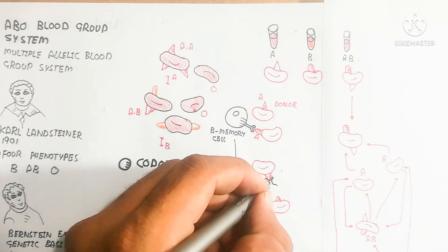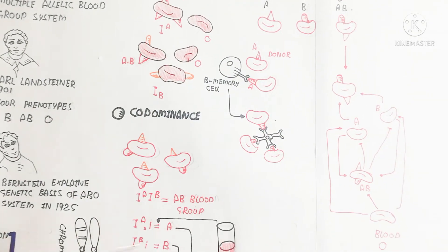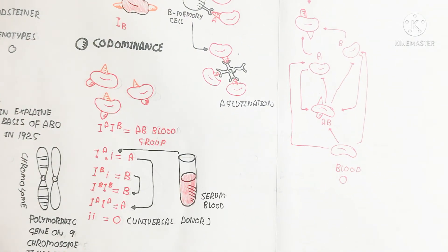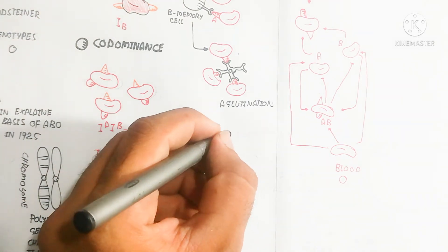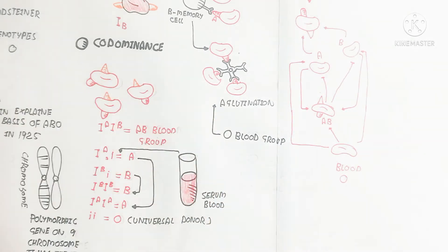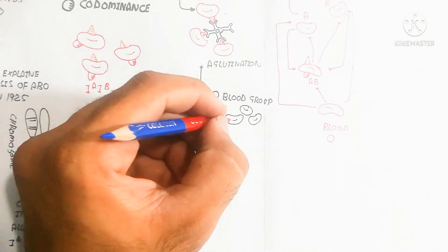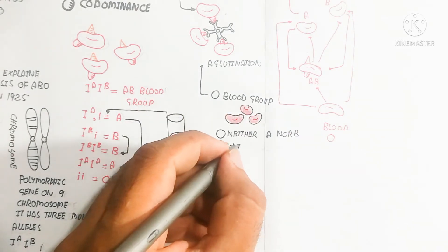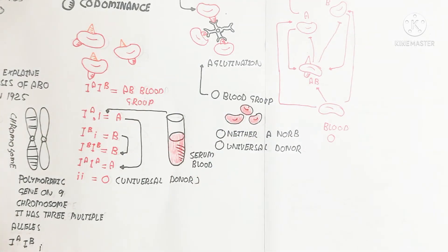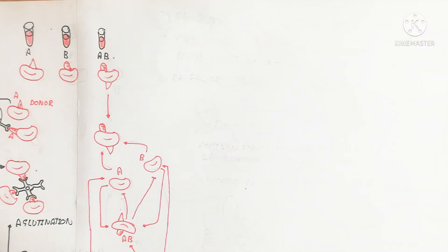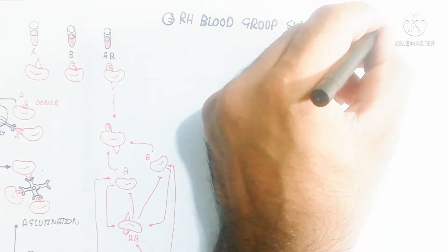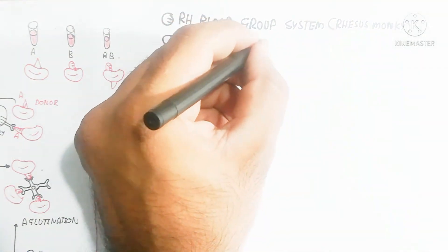When blood is mismatched, B memory cells produce antibodies. These antibodies collapse the donor red blood cells, damaging the capillaries as agglutination formation occurs. Agglutination makes it difficult for cells to flow through the capillary. The red blood cells are damaged, immune cells kill the red blood cells, and anemia or other complications can form. Even death is possible.